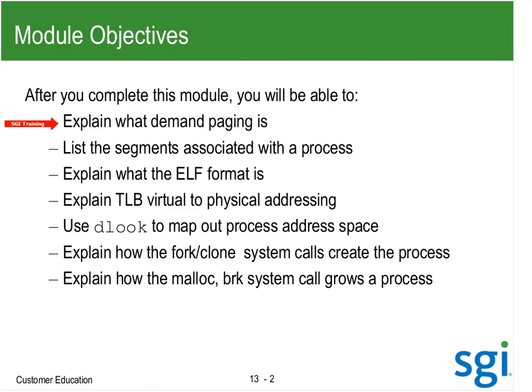We also want to talk about what makes up a process — the three basic segments: the text, the data, and the stack. We'll explain what the binary format ELF is, and one of the key things in the lab is TLB misses. There is a program example, matrix A and matrix B, that you run in lab. This is a rows versus columns, stride-one example, and you can look with the hardware counters at the TLB miss differences.